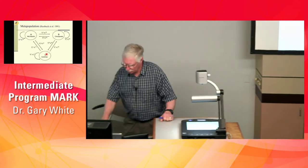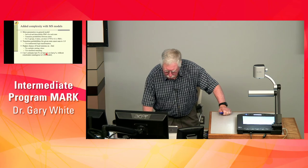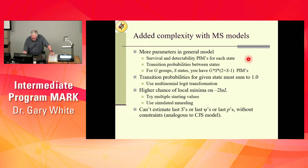Here's what your PIMs look like — there's added complexity and more parameters than the general model. You get a lot of parameters in a hurry with multi-state models. You can fix some to zero, and the transition probabilities for a given state must sum to one, so we use a multinomial logit transformation. You also have a much higher chance of hitting a local minimum.